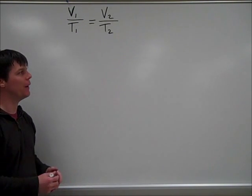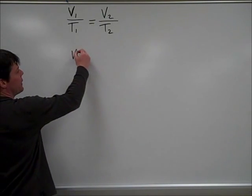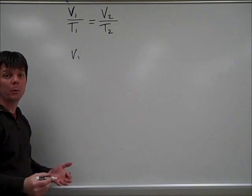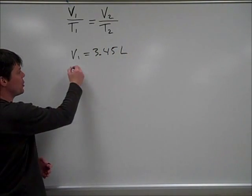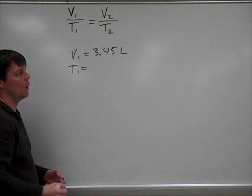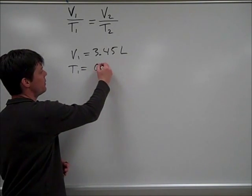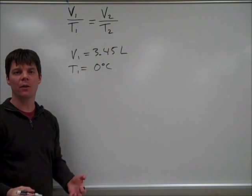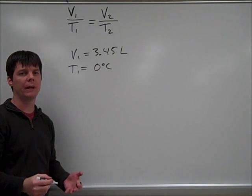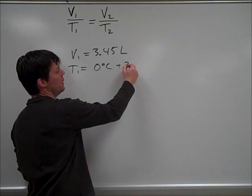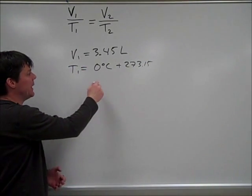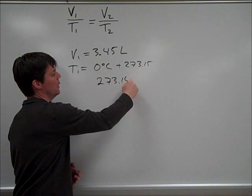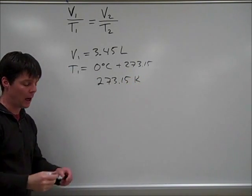Let's go ahead and identify our variables. So we know that the starting volume was 3.45 liters, and our starting temperature was zero degrees Celsius. Now, we always need to convert this to Kelvin when we're working with any of the gas laws. So we want to add 273.15, so we're going to find that this temperature is 273.15 Kelvin.